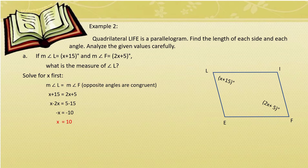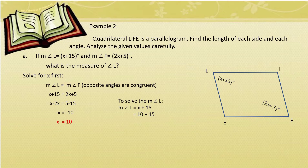Since X = 10, solve for measure of angle L: substitute X, so angle L = 10 + 15 = 25°. Therefore, the measure of angle L is 25 degrees. And since angle L is congruent to angle F, the measure of angle F is also 25 degrees.